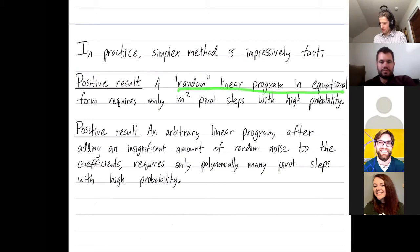So take a random linear program in equational form. I haven't defined that, but you have some random choice of coefficients on your linear program. So with high probability, which means like with probability tending to one, it requires only m squared pivot steps. And I haven't told you what my pivot rule is, but random pivot rules would work fine here. This is really sort of any pivot rule would work fine here. M is the number of constraints.